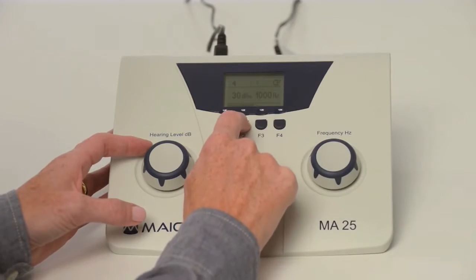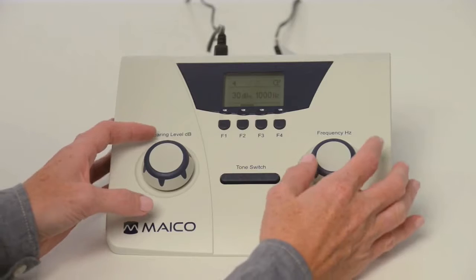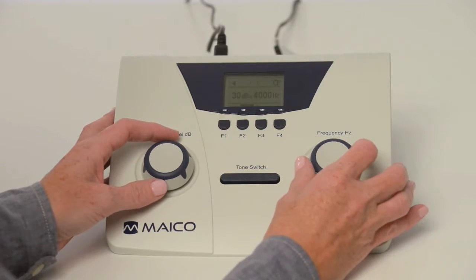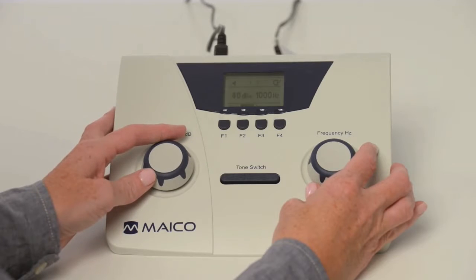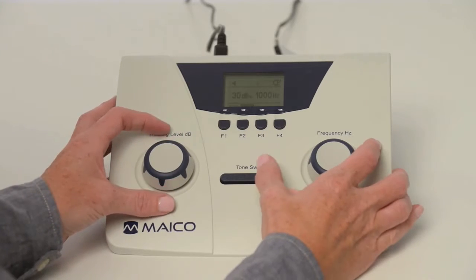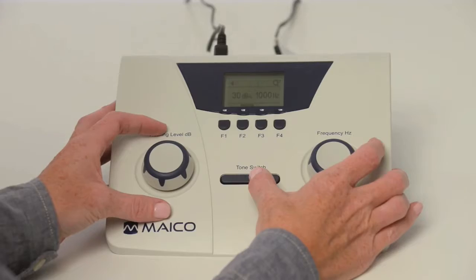Select right or left ear with the function keys. Select the test frequency with the right frequency dial. Select volume level with the left hearing level dial, and press the tone switch one to two seconds to present the tone.